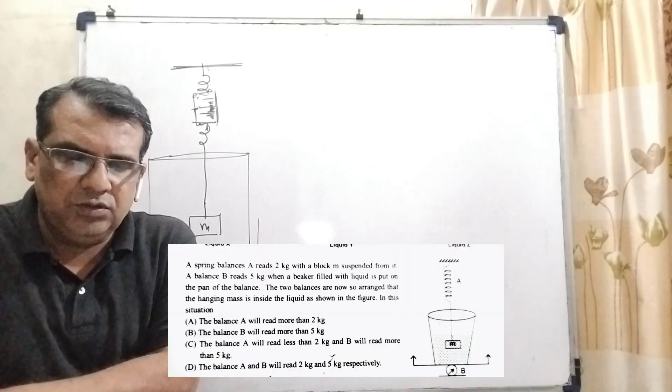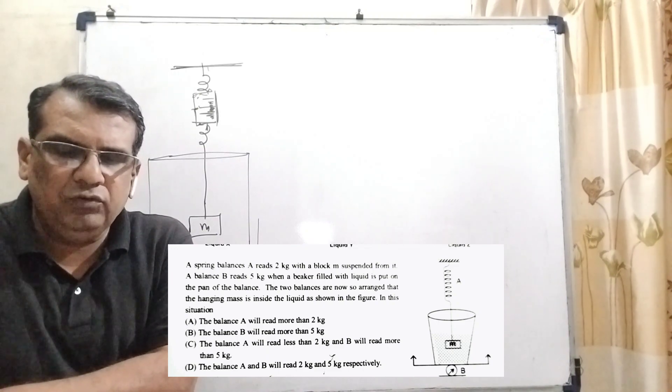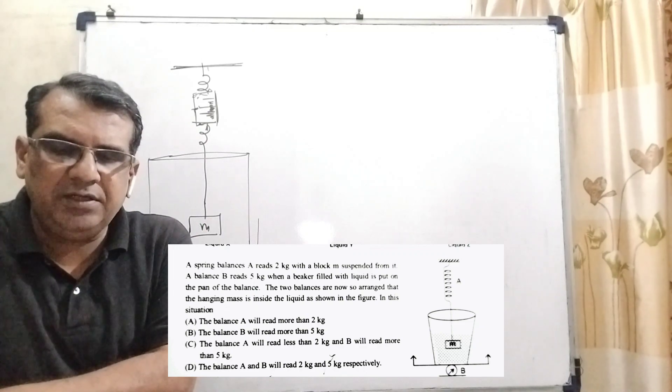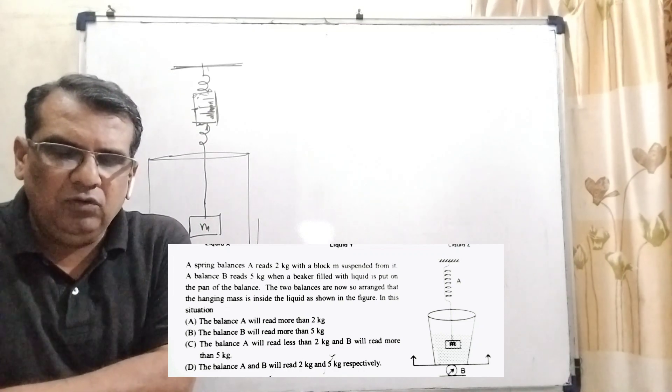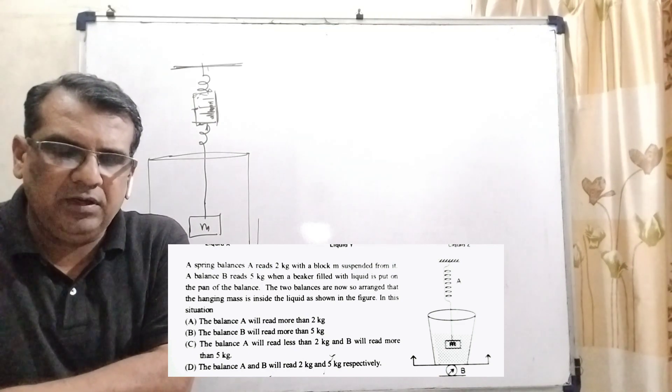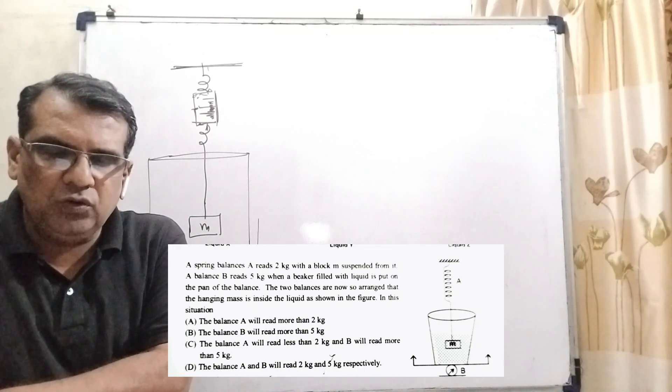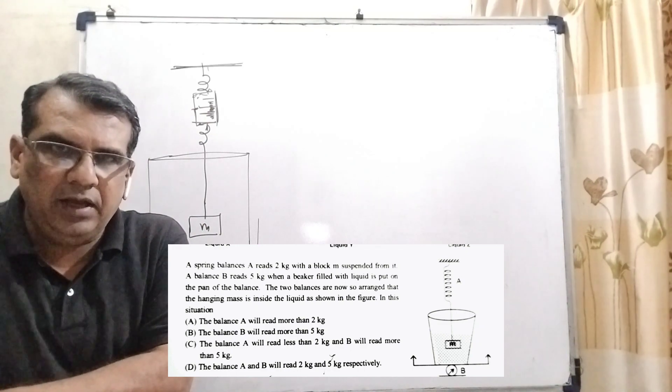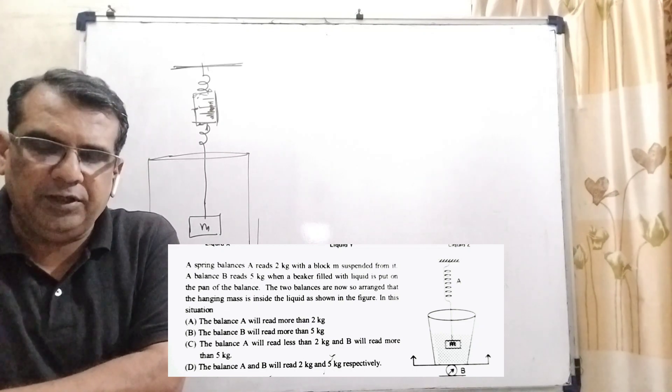Now here is the question. A spring balance A reads 2 kg with a block M suspended from it. A balance B reads 5 kg when a beaker filled with liquid is put on the pan of the balance. The two balances are now so arranged that the hanging mass is inside the liquid as shown in the beaker.